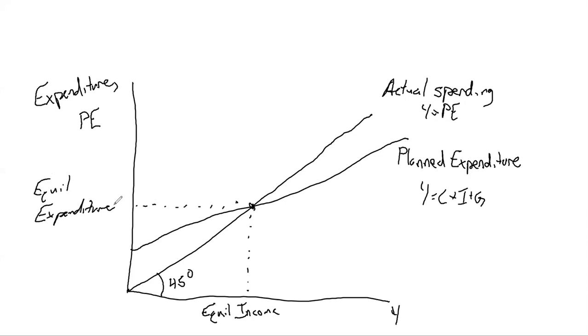And that entire thing when taken as a whole is our Keynesian cross. It shows how our planned expenditure and our actual expenditure interact, and they come together in equilibrium.